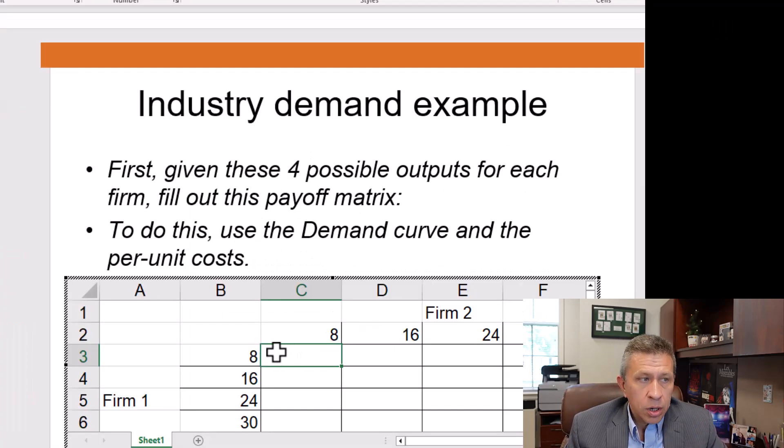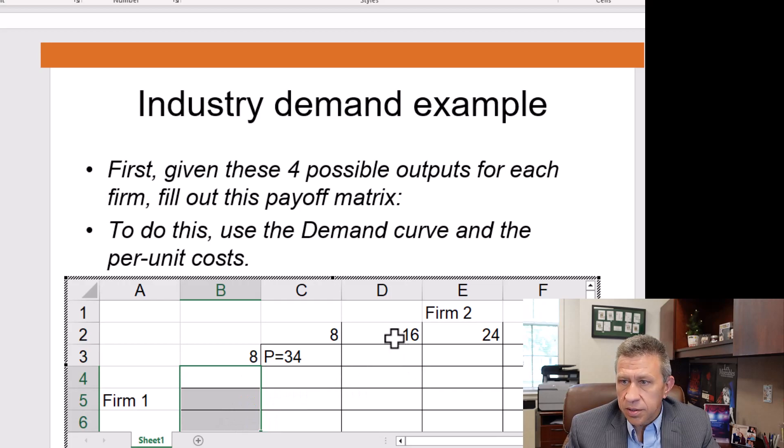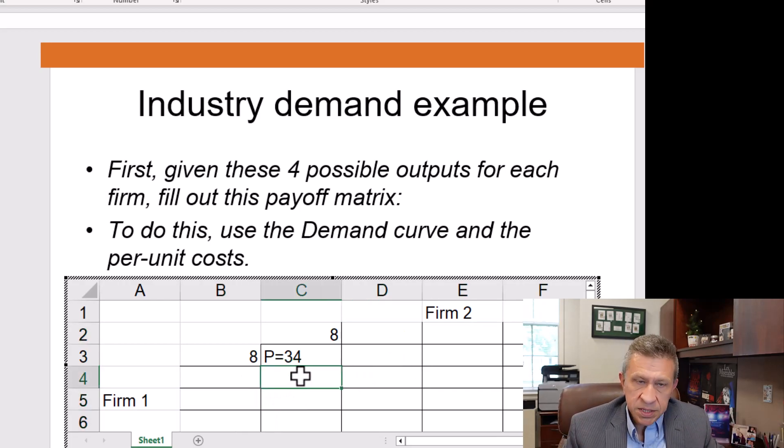So for firm one and firm two, both producing eight units. Remember, the equation is price equals 50 minus the market quantity. Well, if they're each producing, price equals 50 minus 16. So our price equals 34. I'm actually going to delete these other quantities so we don't get messed up with this. The quantity total that's produced in the market is 16. Each firm is producing eight. So we say quantity one equals eight. And remember, the per unit cost equals two. So what's the profit?